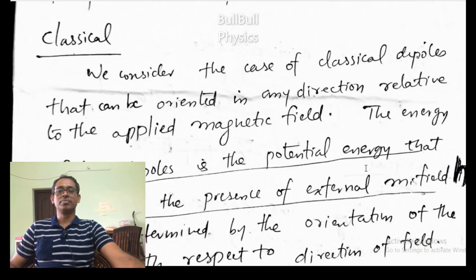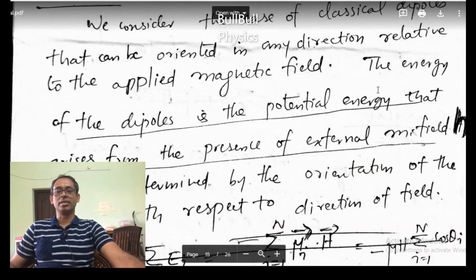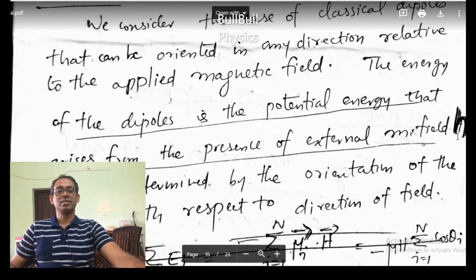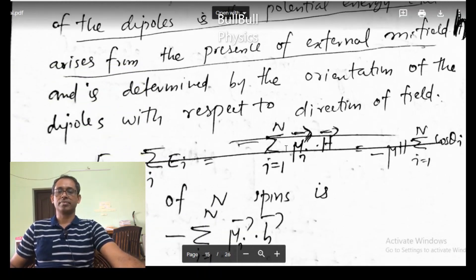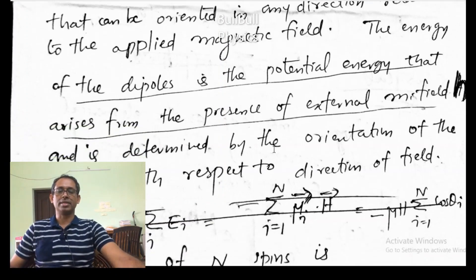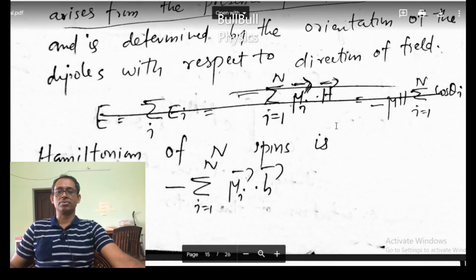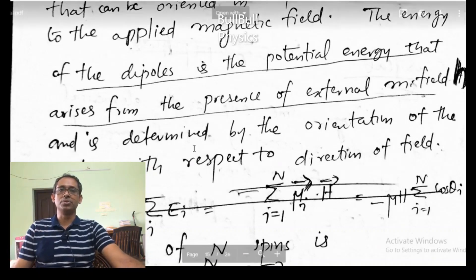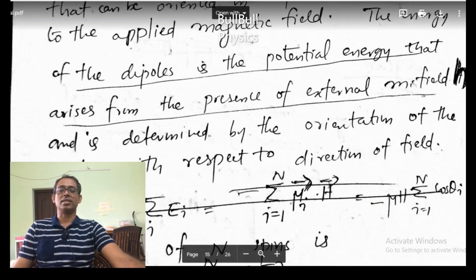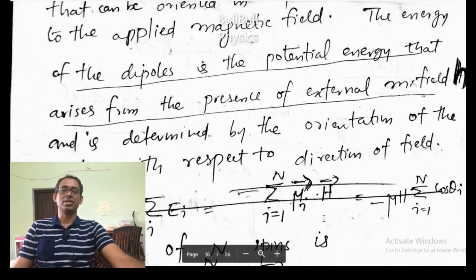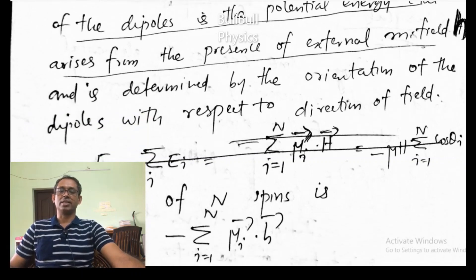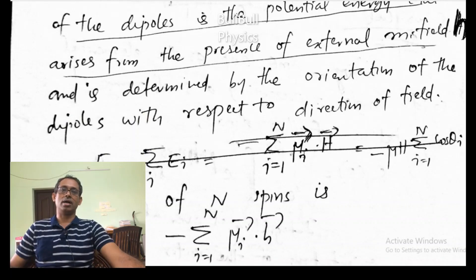The energy of the dipole is the potential energy that arises from the presence of the external magnetic field H (small h), the applied magnetic field. The energy of the dipole is determined by the orientation of the dipole with respect to the field. A dipole of magnetic moment mu in magnetic field H has energy minus mu dot H, or it is minus mu H cos theta, where theta is the angle between the dipole moment and the field.